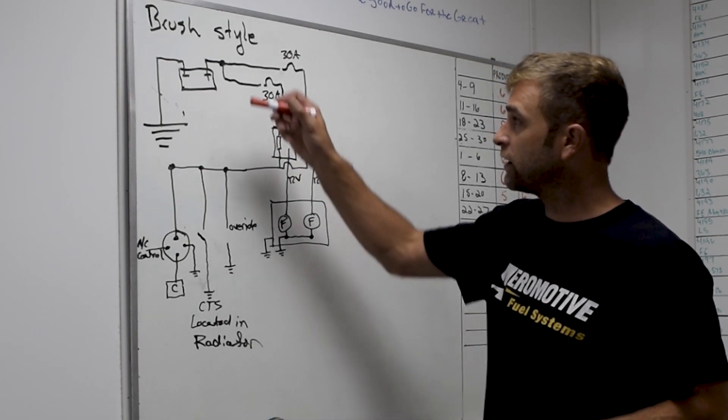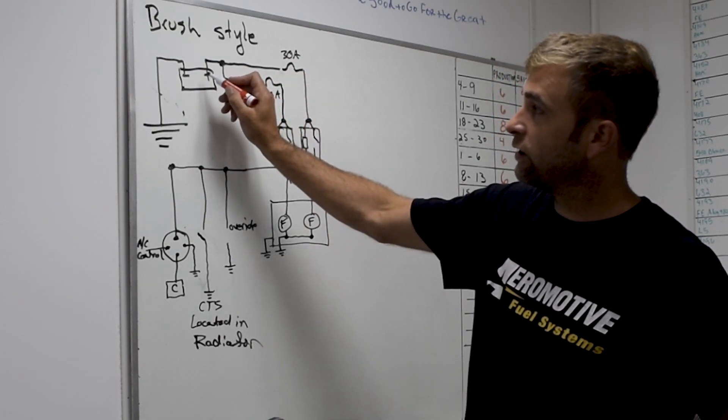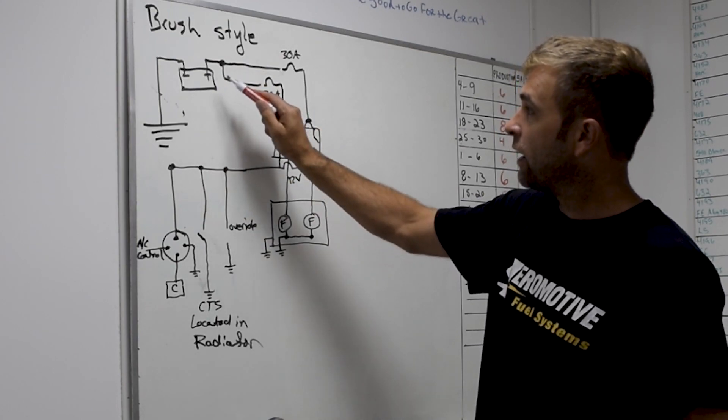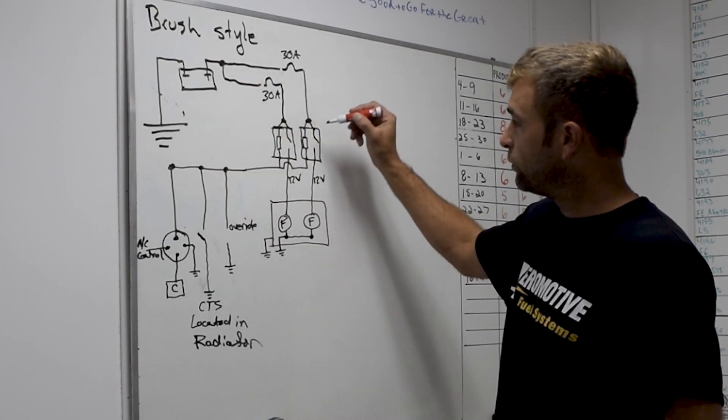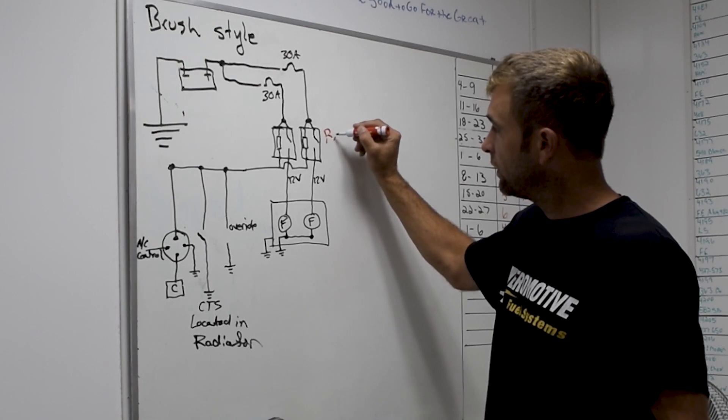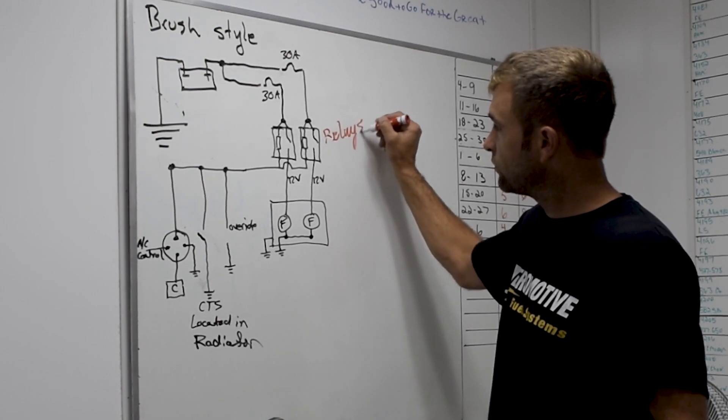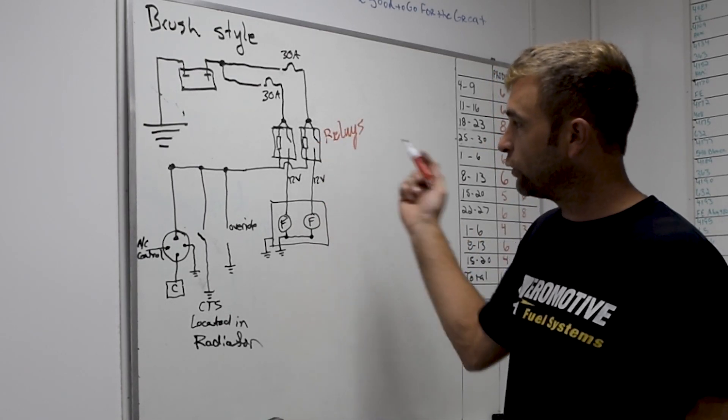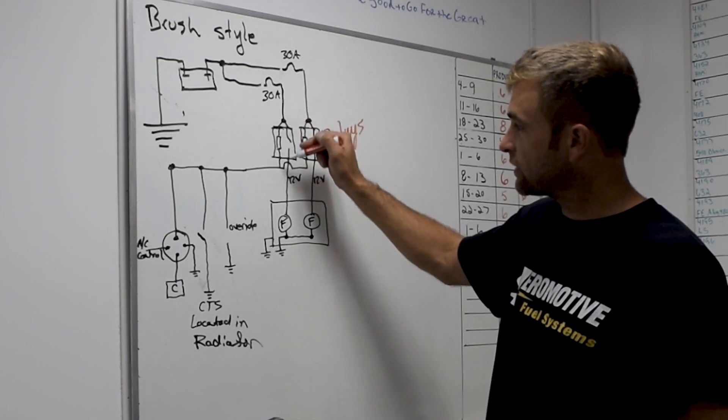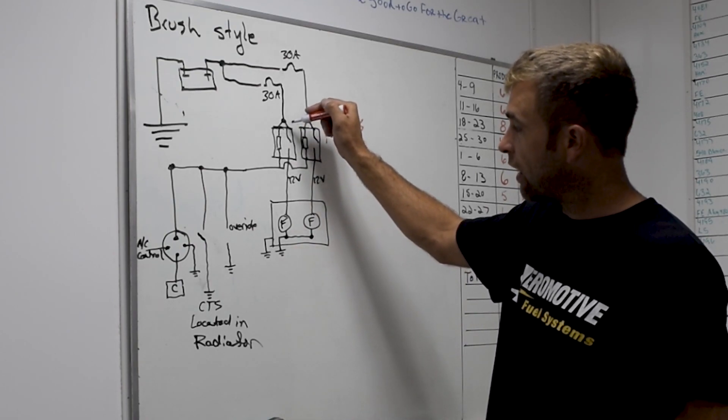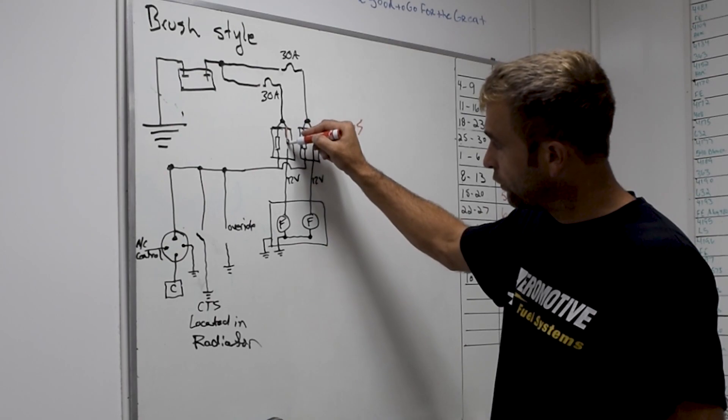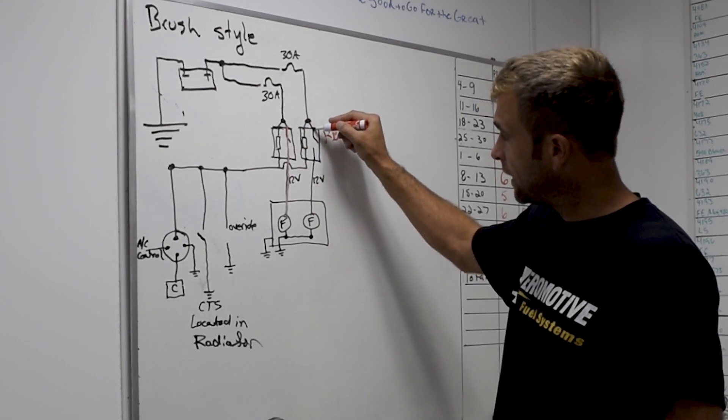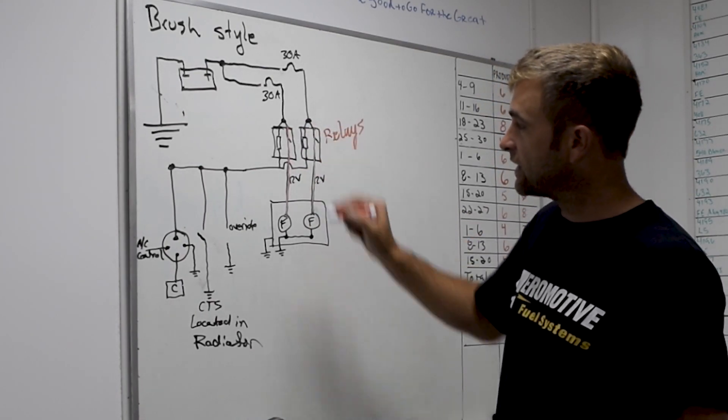I guess I should have done this color coded, but obviously we've got our battery up here and we have battery power that would be coming to our relays. So our relays on a dual fan system, there's going to be two of them obviously. There's your constant power that would go through to the fans whenever the relay is activated.